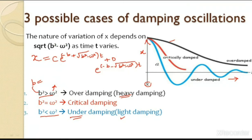In the critical damping case, where b² = ω², there is again an exponential decrease — shown by the red curve. Comparing the end points: the critical damping case reaches the rest position much quicker than over-damping. Critical damping represents the quickest way to attain the equilibrium position — when b² = ω², the particle very soon comes to rest.